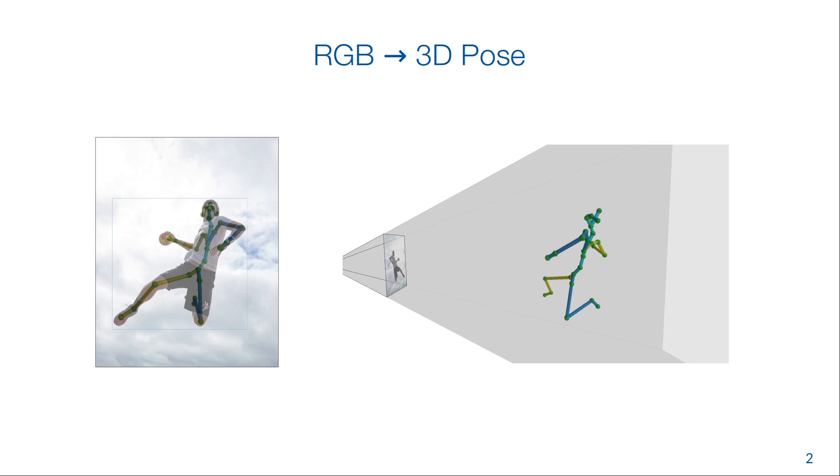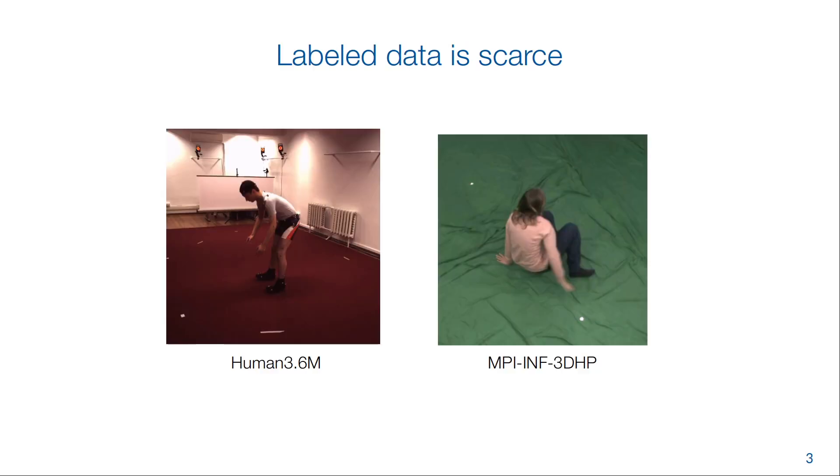For example, to annotate 2D poses you can just click on the body joint pixels, but annotating depth is not possible that way. So most 3D pose datasets are recorded in a studio environment, which means that the models often overfit to the studio and don't generalize very well to the wild.